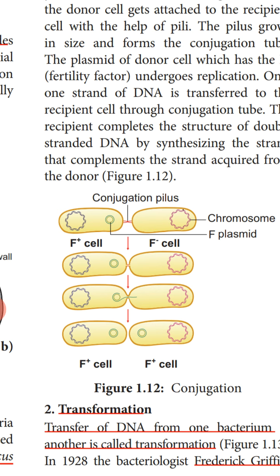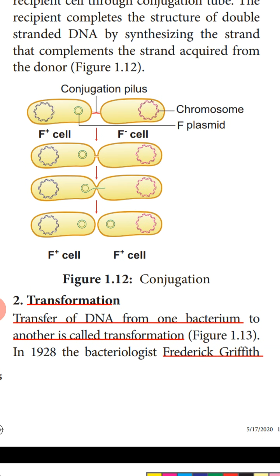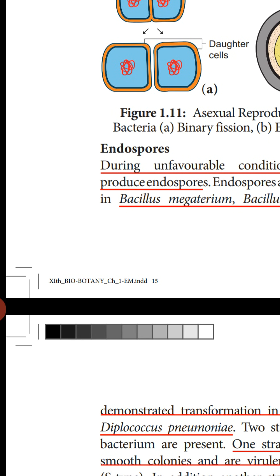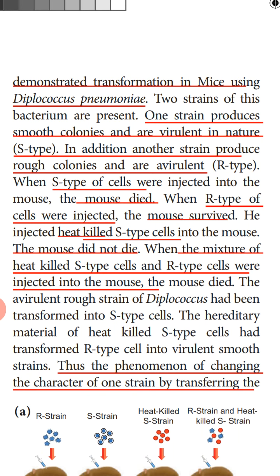Conjugation is considered sexual reproduction in bacteria, though no true sexual reproduction takes place. The next type of gene recombination is transformation — the transfer of DNA from one bacterium to another. In 1928, bacteriologist Frederick Griffith demonstrated transformation in mice using Diplococcus pneumoniae. He studied transformation through his famous mice experiment using a pneumonia-causing strain.